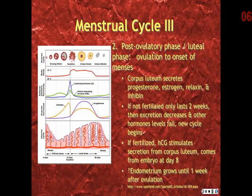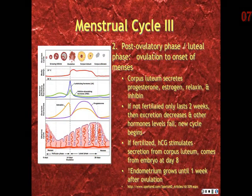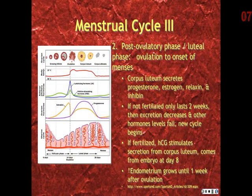The post-ovulatory phase, or luteal phase, occurs between ovulation and the onset of menses. Here the corpus luteum secretes progesterone, estrogen, relaxin, and inhibin. If there is no fertilization, this will only last two weeks before hormone secretion decreases and hormone levels fall for a new cycle to begin.